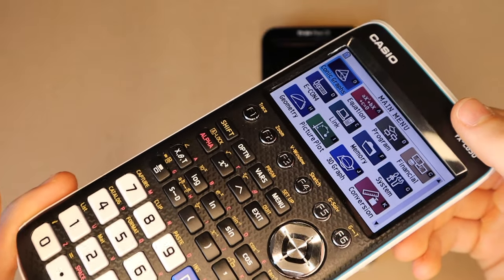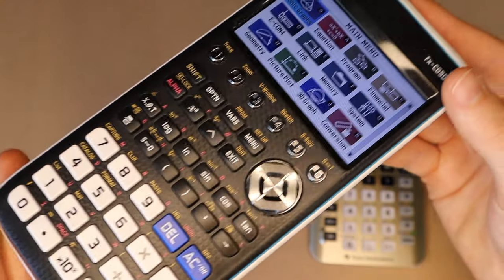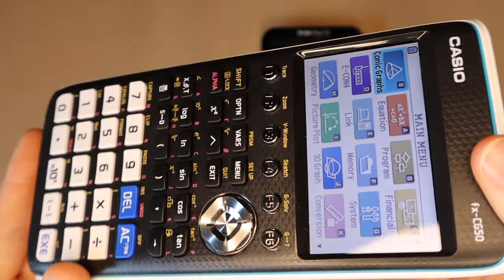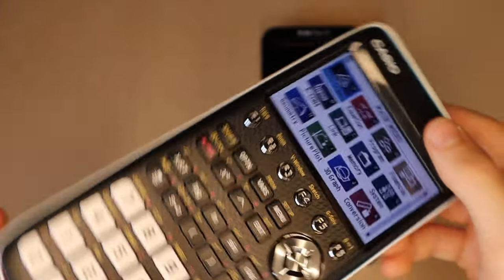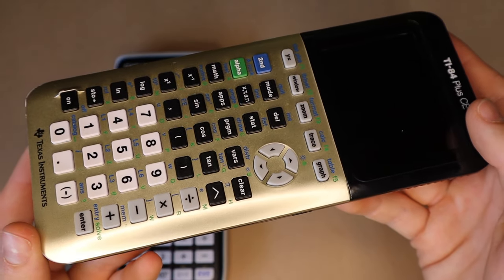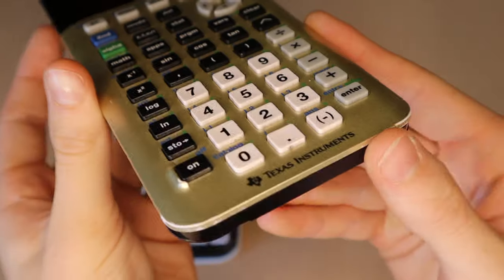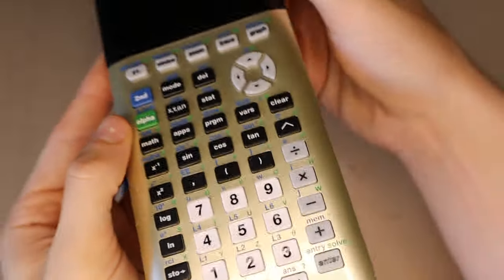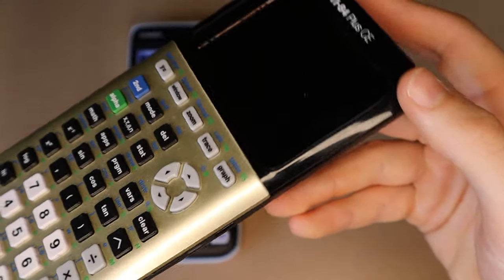Both calculators are all plastic, and the Casio has this fake carbon fiber-looking pattern on the panel behind the buttons. And the TI-84 Plus has plain matte plastic behind the buttons, and that comes in quite a few different colors. This is the gold version.